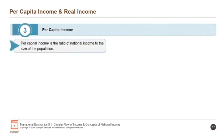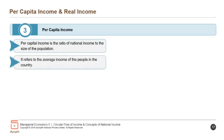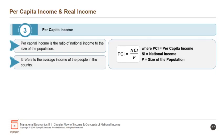Per capita income is the ratio of national income to the size of the population. It refers to the average income of the people in the country. PCI = NI / P, where PCI is per capita income, NI is national income and P is the size of the population.